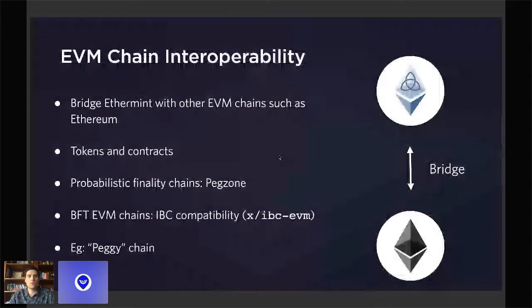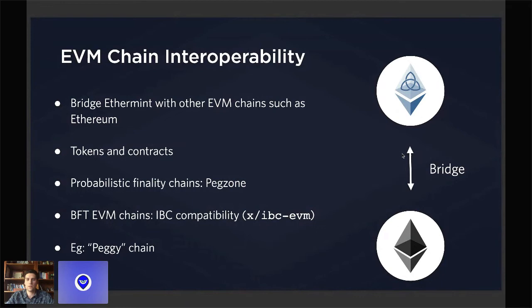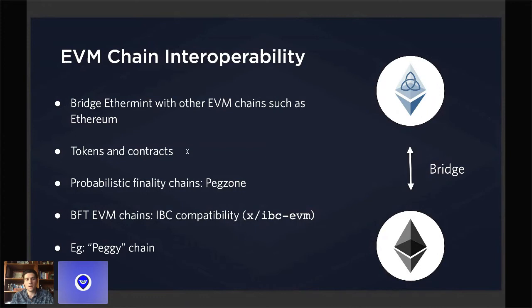The fourth one will be EVM chain interoperability, which is basically what we've known so far as bridges. All the bridges — like what Peggy already offers — provide pseudo-finality for contracts from Ethereum. You route the transactions within the chain and then transfer them over to Ethermint through a relay process. This will allow you not only to transfer tokens but also eventually call smart contracts through these pseudo-finality relay. For BFT chains that implement the EVM, you'll have to implement the IBC-EVM module.